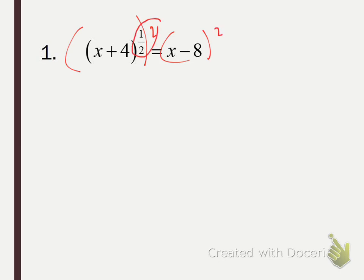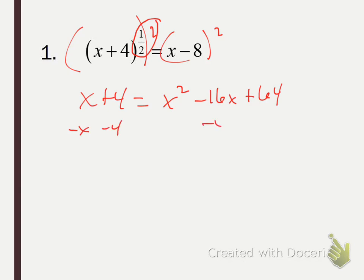If I square both sides, multiplying those exponents gives us 1, and we get x plus 4 on the left. Then we've got to square x minus 8 on the right. Quick shortcut on squaring a binomial — you would have to go x minus 8 times x minus 8 and double distribute, but there's a shortcut: square, double, square. Square the first term, double the second term with x, then square the second term. Now we have a quadratic equation that we need to set equal to zero.